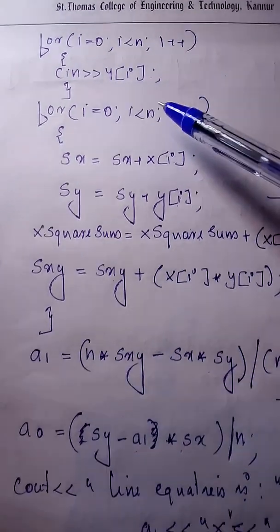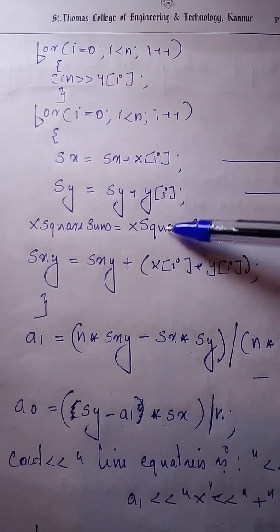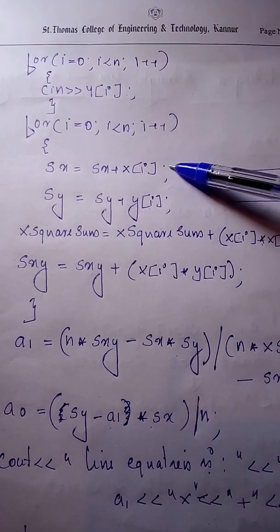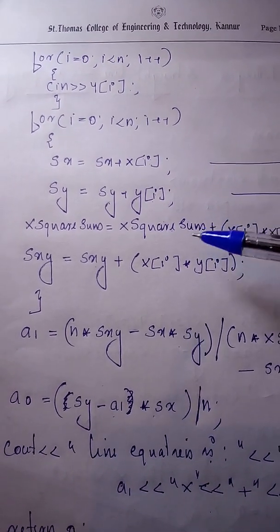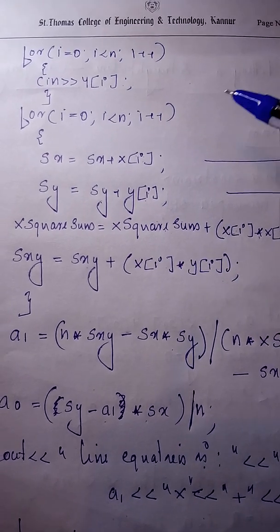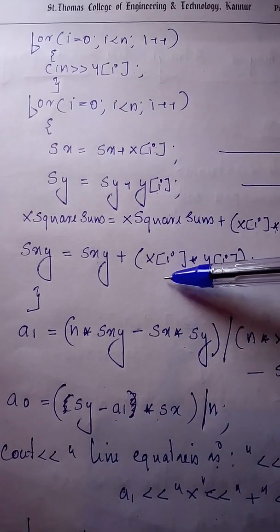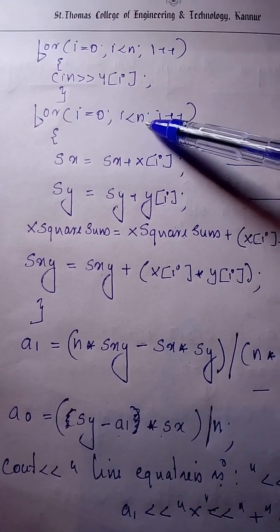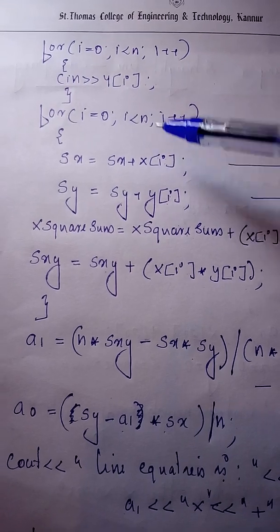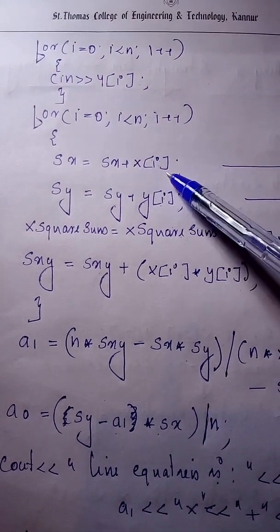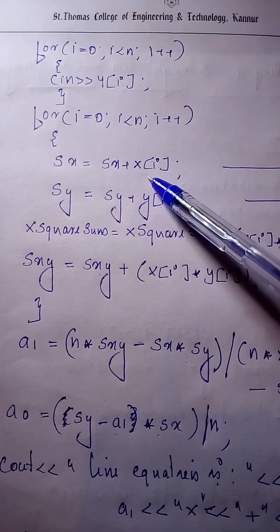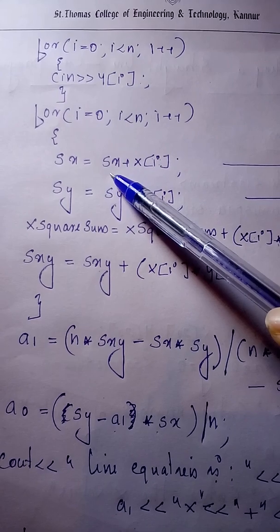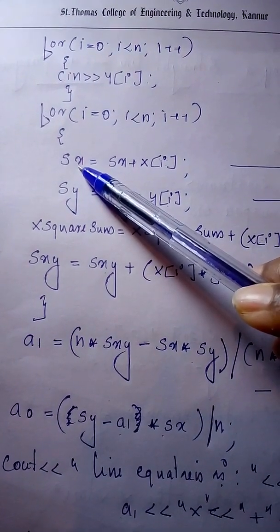Then this for loop, with i equal to 0 and i less than n, is used to compute sigma x, sigma y, sigma x square, and sigma xy. For the first iteration, i equals 0: the first x term x[0] is added to sx, and the result is stored into sx. Sx is initialized to 0 before the loop.